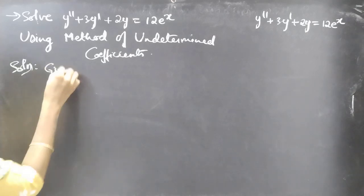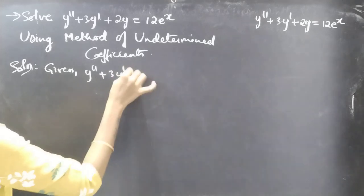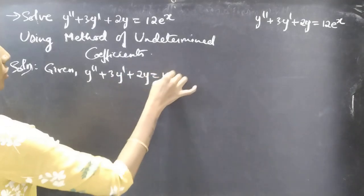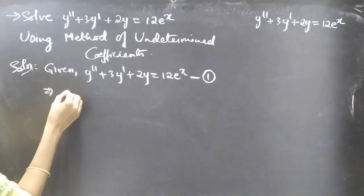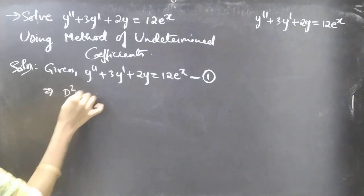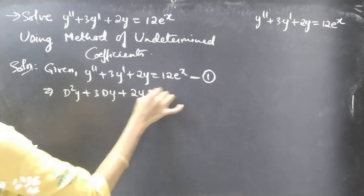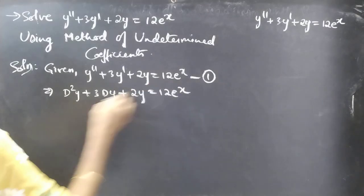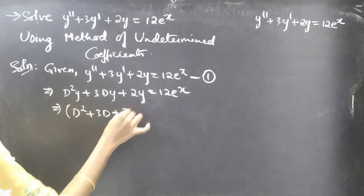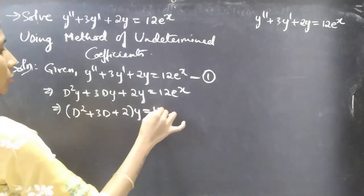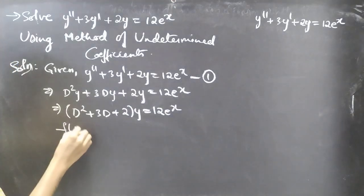Given differential equation: y'' + 3y' + 2y = 12e^x — consider this as equation number one. We can write this equation as D²y + 3Dy + 2y = 12e^x. Taking y common from all the terms on the LHS, we get (D² + 3D + 2)y = 12e^x, which is in operator form: f(D)·y = Q(x).